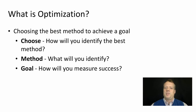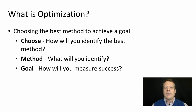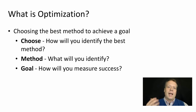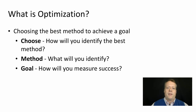I define optimization very simply: it's choosing the best method to achieve a goal. In the marketing context, we usually mean this as choosing the particular copy or text that you're going to use to achieve something like a click-through rate. And there are really three components to that.